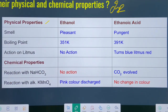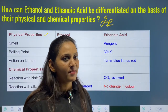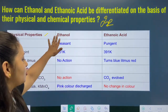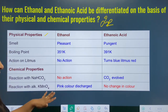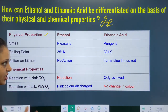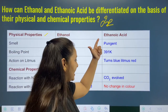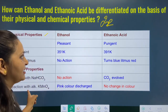Next, the reaction with alkaline KMnO4, which is potassium permanganate. Ethanol will discharge the pink color of potassium permanganate, while ethanoic acid does not decolorize potassium permanganate.